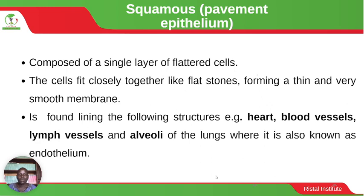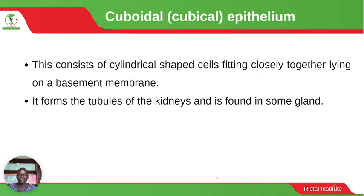Then we have the cuboidal epithelium, which consists of cylindrical-shaped cells fitting closely together lying on a basement membrane. It forms the tubes of many tubules of the kidneys and is found in some glands.